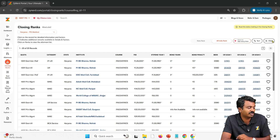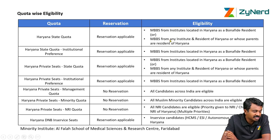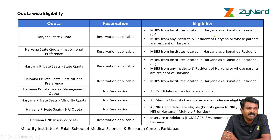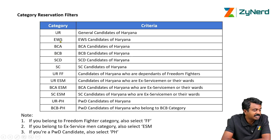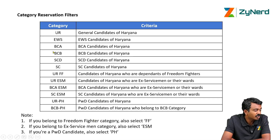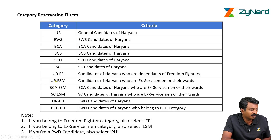For category filters: the category reservation is for candidates who are residents of Haryana — only they will be able to produce Haryana certificates. If you have done MBBS from Haryana and are also a resident of Haryana, you can produce a Haryana certificate. If you are from Karnataka with a Karnataka certificate, you will not be eligible for reservation and will come under UR. Haryana reservation categories include EWS, BCA, BCB, SCD (SC general), and SE (SC private). Beyond these, you can also select FF (Freedom Fighter), ESM (Ex-Servicemen), and PH (Persons with Disability) categories.